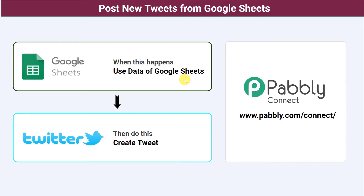You and your team are maintaining a Google Sheet for new software announcements along with the date. You want your announcements to be automatically posted on Twitter from Google Sheets every day without posting them manually. This is useful when you are not available for a week and you want your software announcements to not be stopped. Here we want whatever data we have in Google Sheets to be used to automatically create a post on Twitter.